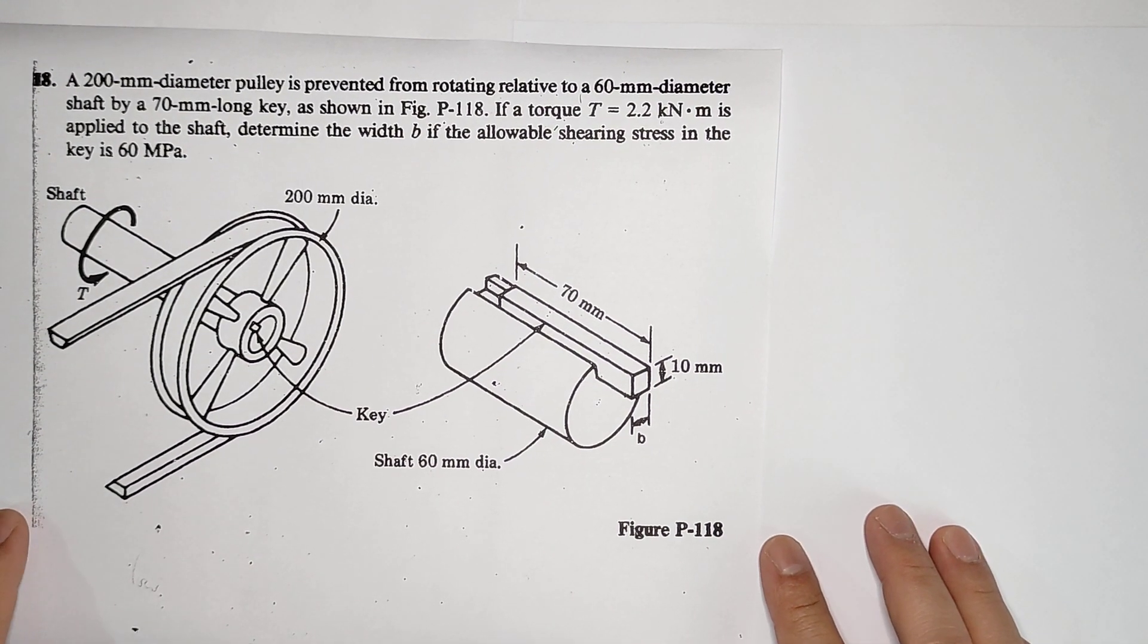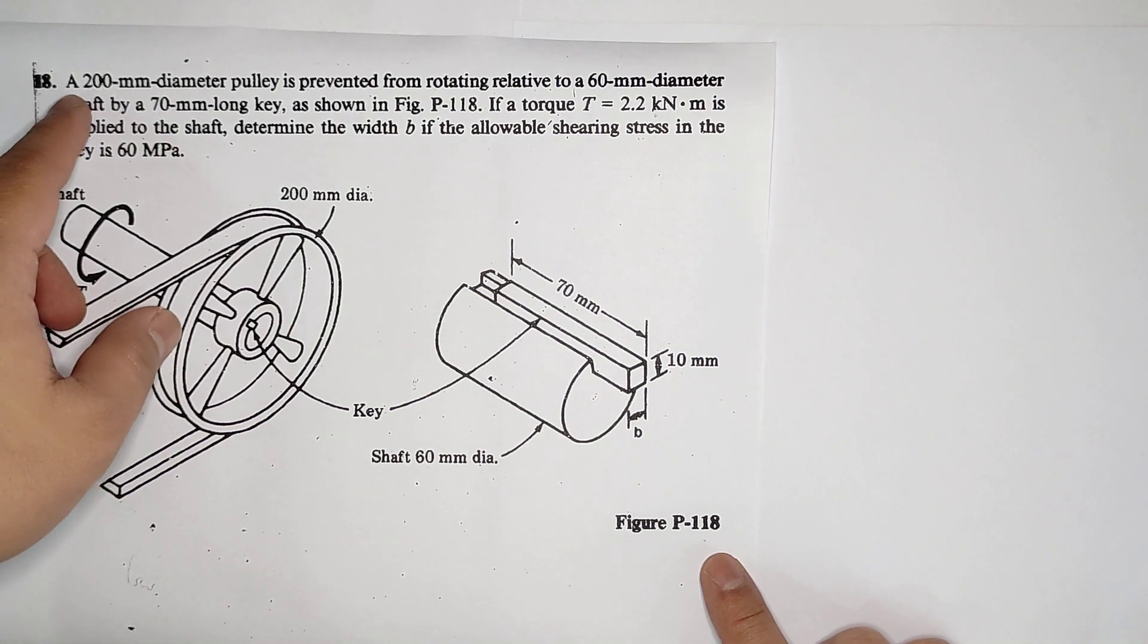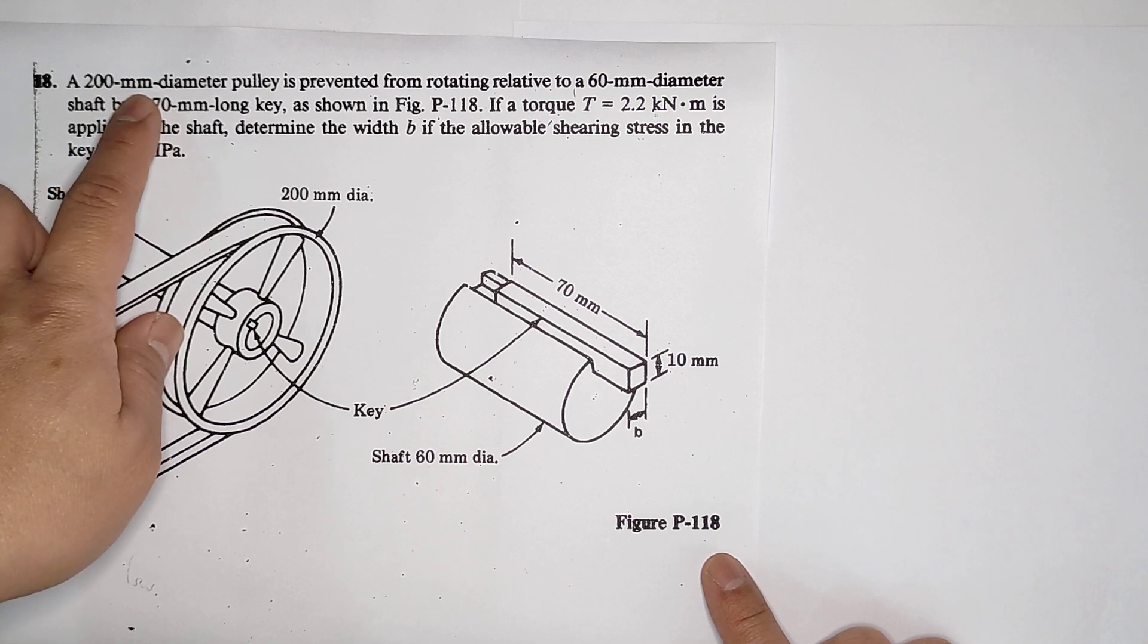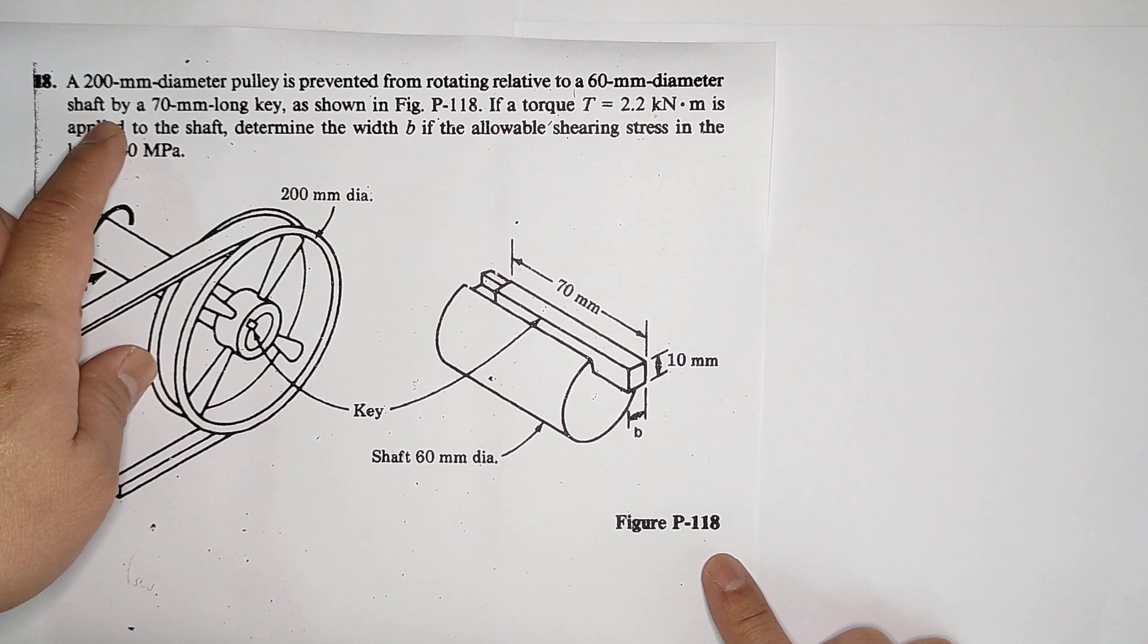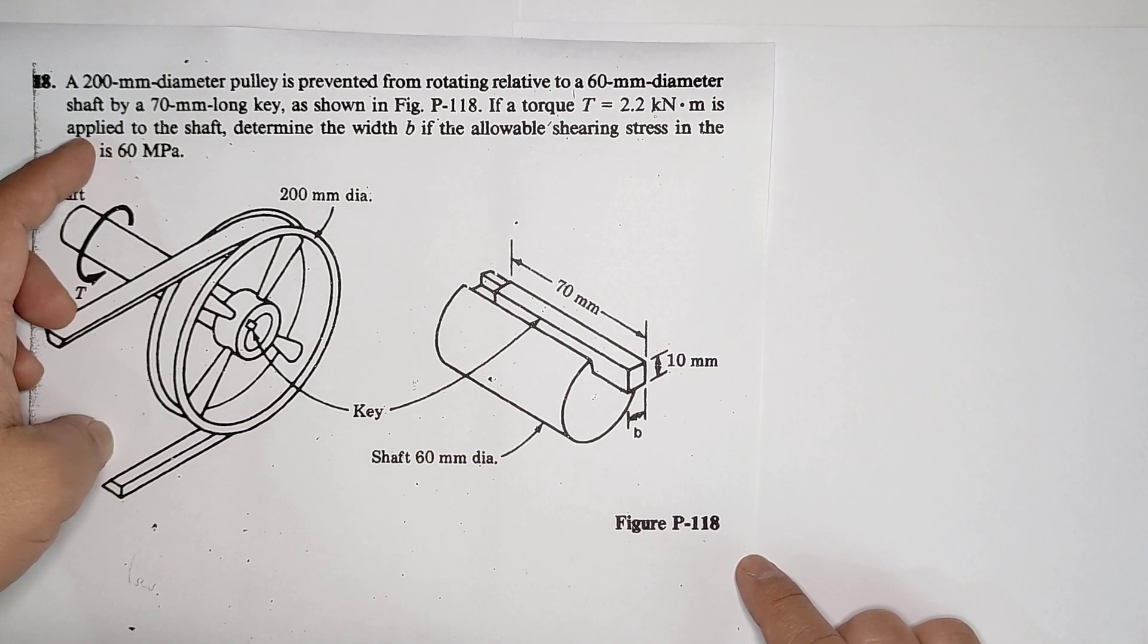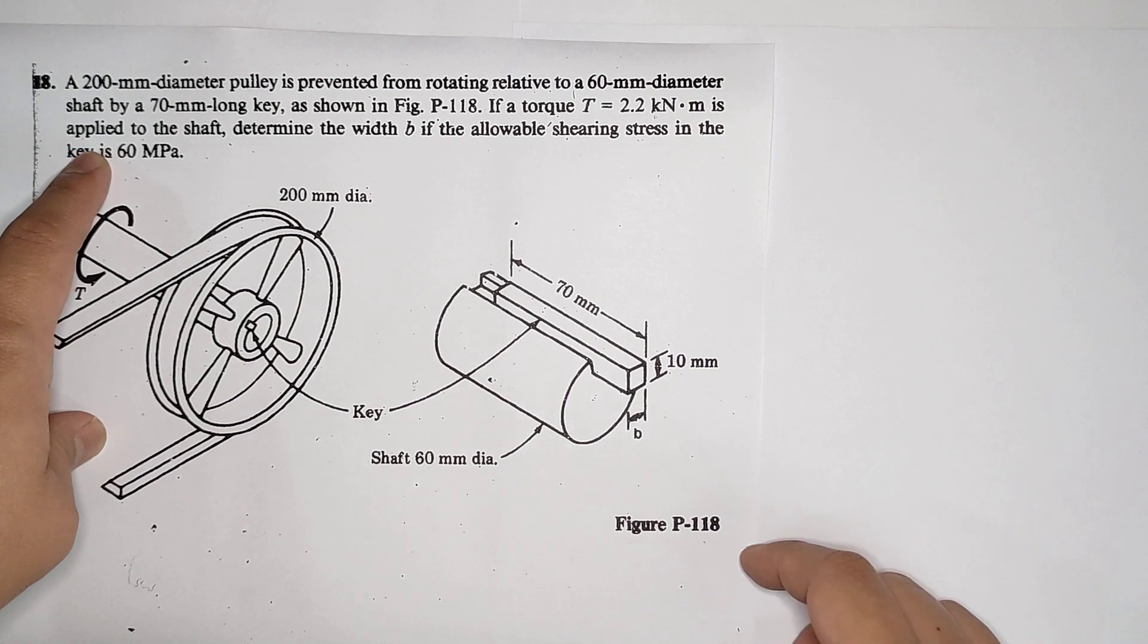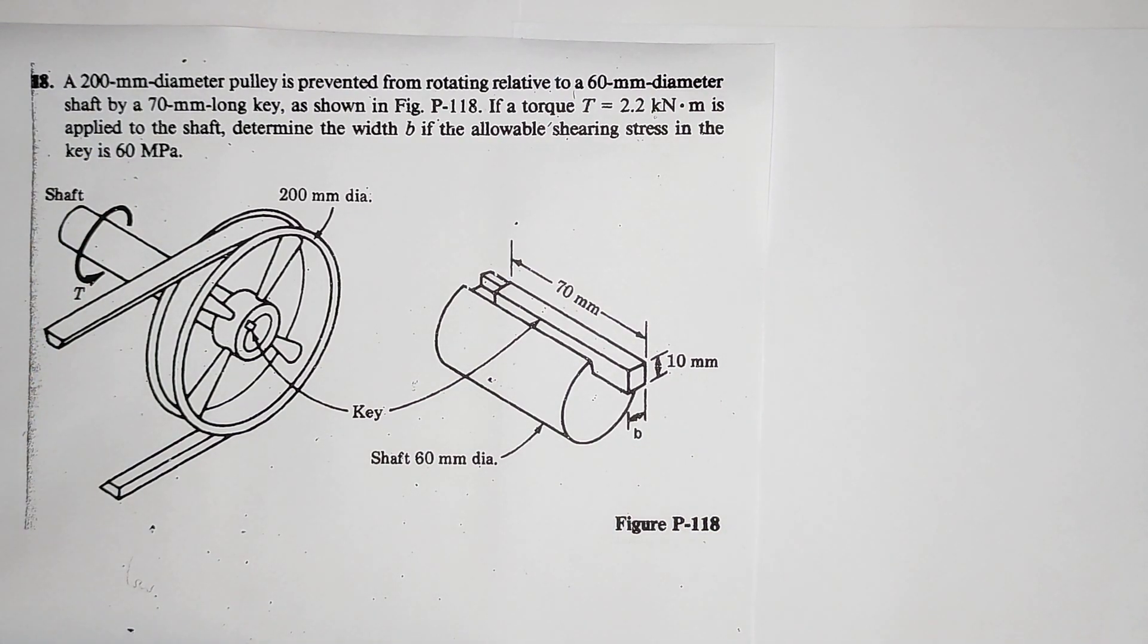Hello, so let's answer problem 118. It says a 200 mm diameter pulley is prevented from rotating relative to a 60 mm diameter shaft by a 70 mm long key as shown in the figure. If the torque T equals 2.2 kNm is applied to the shaft, determine the width B if the allowable shearing stress in the key is 60 MPa.